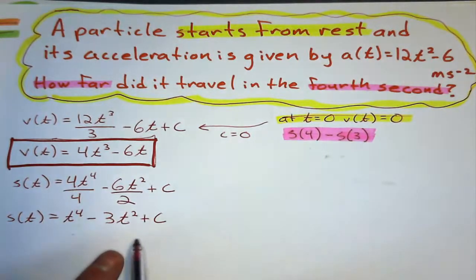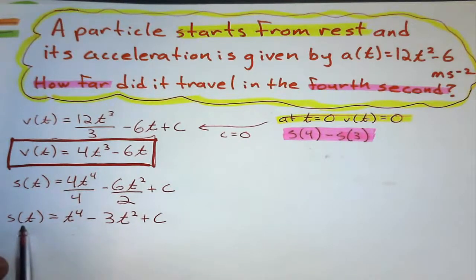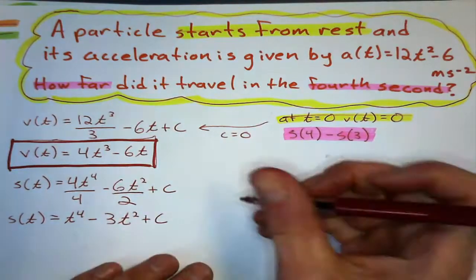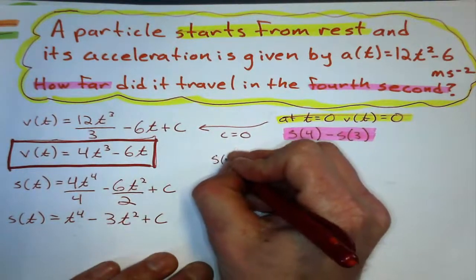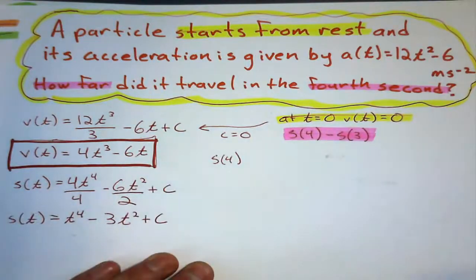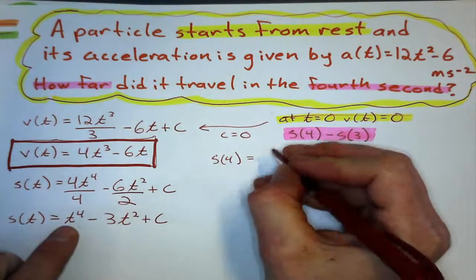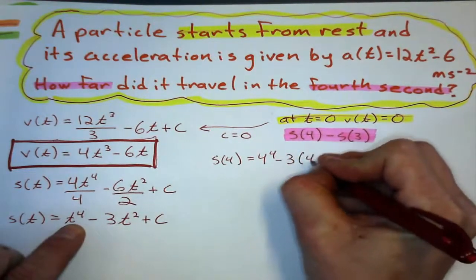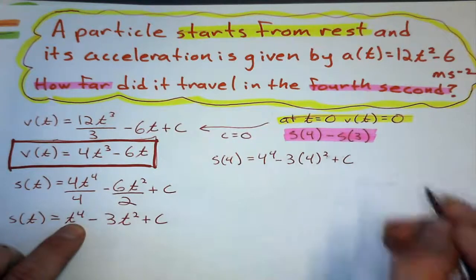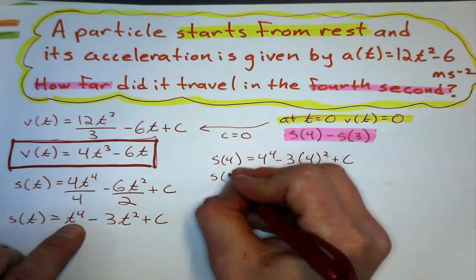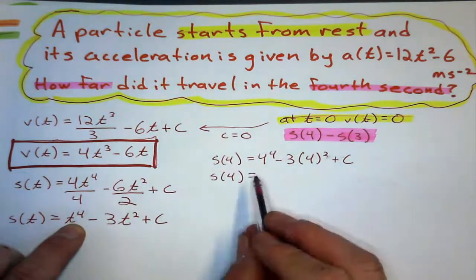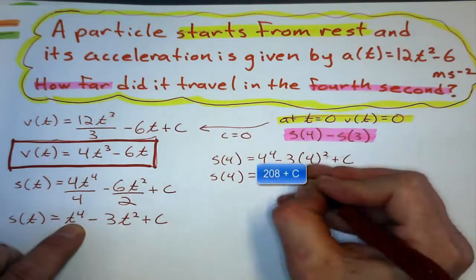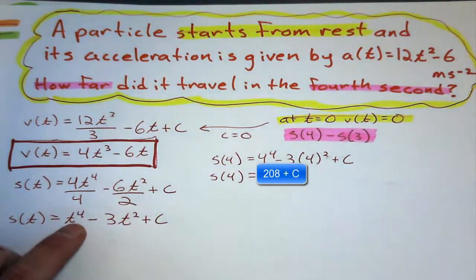Now here I can't assume C is zero — it starts from rest, but I'm not sure if it starts from the origin, so I have to leave that as C for the moment. Now I've got the displacement function. The displacement after four seconds equals four to the power of four minus three times four squared plus C, which works out to 208 plus C.